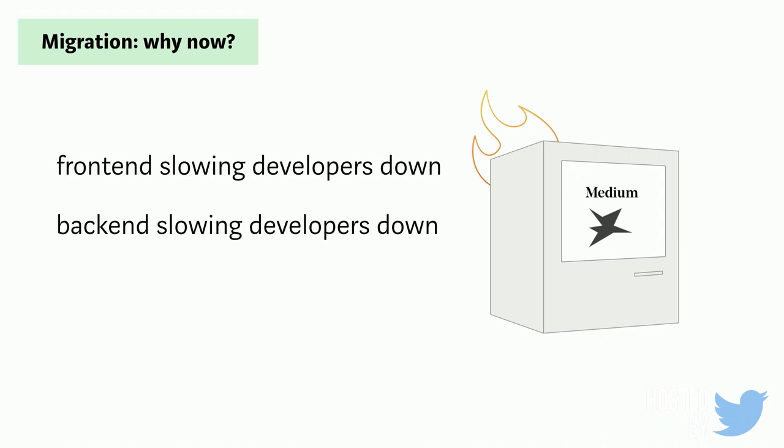Also, our existing back end is slowing developers down. There's a lot of tech debt, and people who used to know how the whole system worked have moved on, and right now people are basically afraid to make changes in it. And maybe the biggest thing is poor performance — our system right now is just slow. Not all parts are slow, but because of how our system is architected, the slow pieces start affecting pieces that would normally be performant.